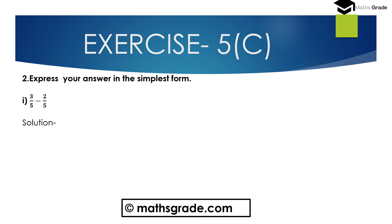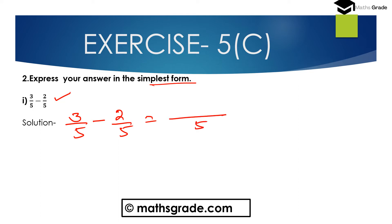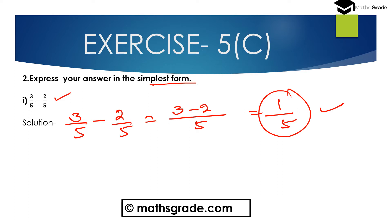Now question number 2: express your answer in simplest form. First bit: 3 divided by 5 minus 2 divided by 5. When we subtract two like fractions having equal denominator, just subtract the numerator divided by the common denominator. The common denominator is 5. Subtract the numerators: 3 minus 2 is 1, divided by 5. So 3 divided by 5 minus 2 divided by 5 equals 1 divided by 5, which is in the simplest form.